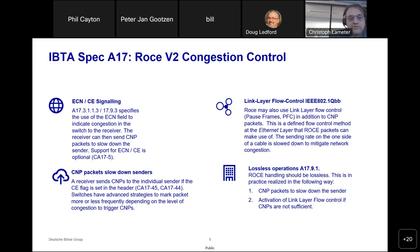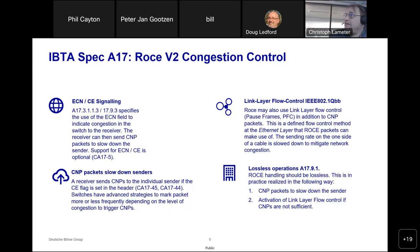We also have link-layer flow control on the whole interface so we can stop all traffic if necessary. That is particularly necessary if you have multiple senders — say ten — that all ramp up and start immediately sending at full bandwidth. At that point, the CNP slowdown mechanism doesn't work, and you need to stop the flow at the link level to allow the CNP mechanism to catch up and avoid packet loss. The specification says that RoCE handling should be lossless, realized by CNP packets as well as link-layer flow control.